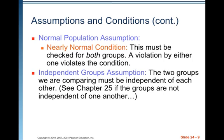Here's a new but very important one: the independent groups assumption. The two groups we're comparing must be independent of each other. Think about whether they are plausibly independent — is there anything linking the two? In Chapter 25, we're going to see what to do with groups that are not independent of each other; we can still do a test and create an interval, but we have to use different methods.